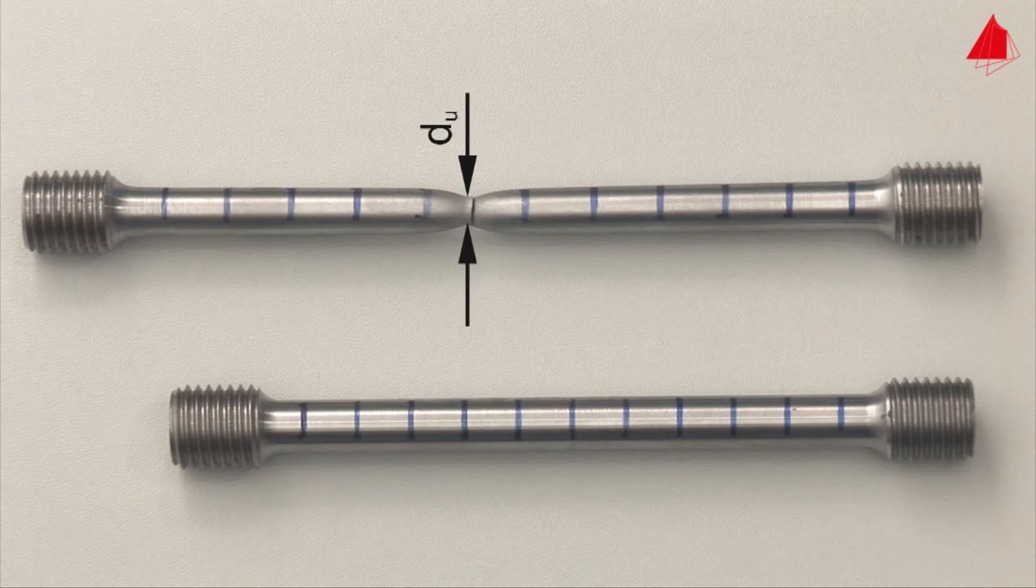By measuring the smallest diameter at the point of fracture, the percentage reduction of area can be calculated. It describes the reduction of cross-sectional area at the point of fracture in relation to the original cross-sectional area.